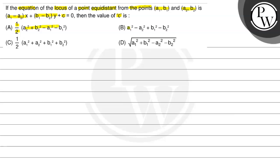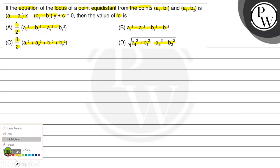Option B: a1² − a2² + b1² − b2². Option C: 1/2 (a1² + a2² + b1² + b2²). Option D: square root of (a1² + b1² − a2² − b2²).